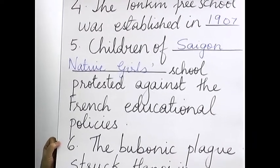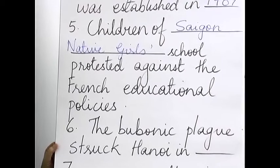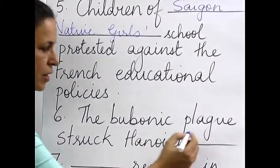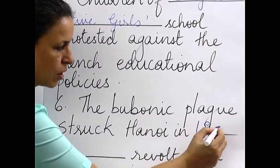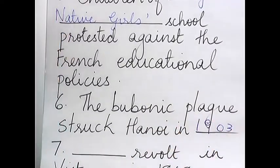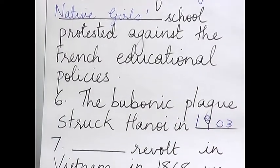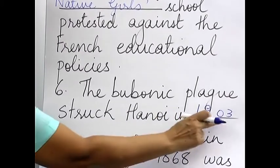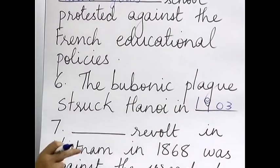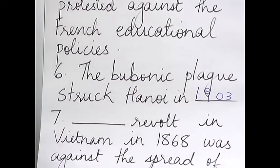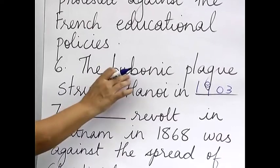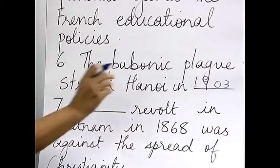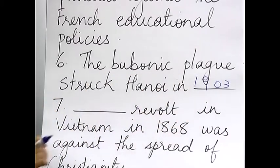Sixth: the bubonic plague struck Hanoi — you have to write the year — this was in 1903. If they ask which epidemic spread in Hanoi in 1903, you write bubonic plague. If they ask in which year did the bubonic plague strike Hanoi, you write 1903.